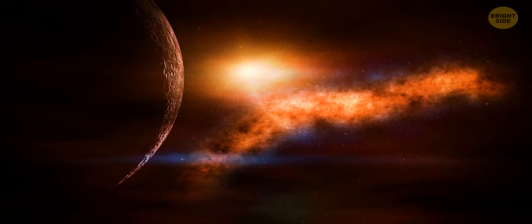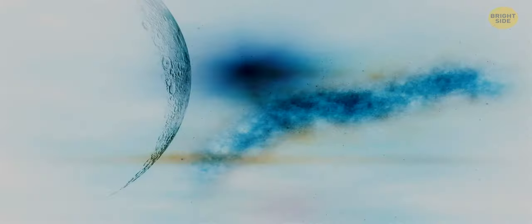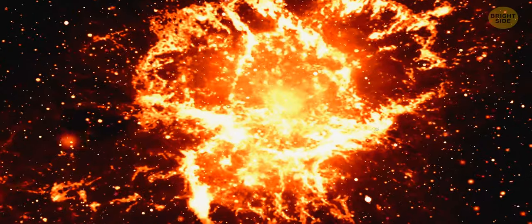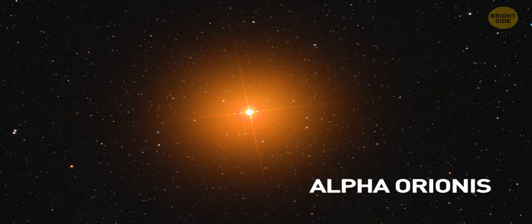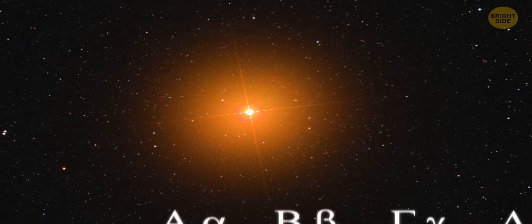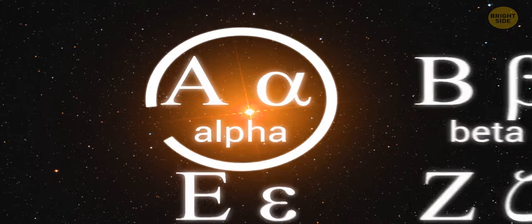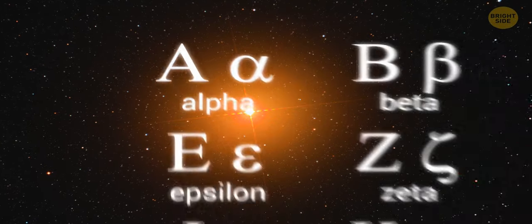Betelgeuse is by far the brightest star in the whole sky, in infrared light. This is an important fact because it relates to Betelgeuse's status as a supernova candidate, as we shall soon see. Betelgeuse is also named Alpha Orionis, another Greek letter designation. So, we should conclude that Betelgeuse is the brightest star in Orion, right?